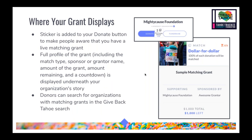When your match is set up and goes live, a sticker will be added to your organization profile telling donors you have an active match. At the bottom of your profile, information about the match will appear — the grantor's name, who it's sponsored by, and how much of the grant remains. Additionally, there's a filter in our search that allows donors to find any organization with a currently active matching grant, so your organization will show up with that filter on.